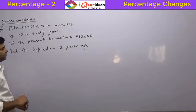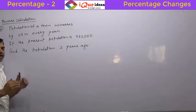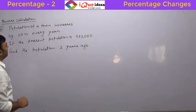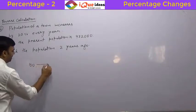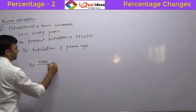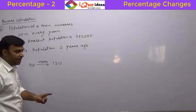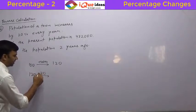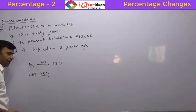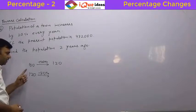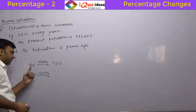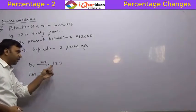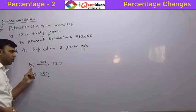This is a very interesting situation. A percentage calculation can only be done in the forward direction — remember that. So if there is a value 100 and it increases by 20 percent, it becomes 120. That does not mean that if you reduce 120 by 20 percent, you will get 100. No.